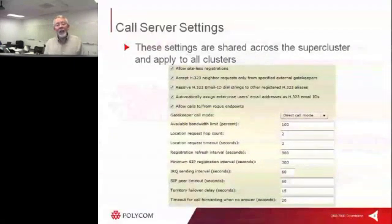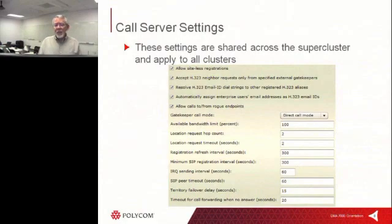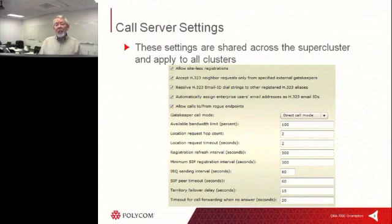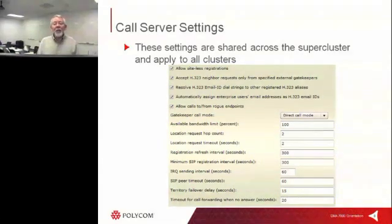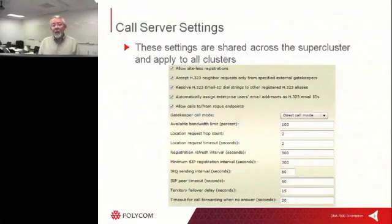Let's look at the call server functions now being provided. These are shared across the supercluster and applied to all clusters. One thing about superclusters: they automatically communicate with each other — there's no master and no slave. When a new cluster comes into the supercluster, it is automatically brought up to speed and its information is shared around. Some of the call server settings include the gatekeeper, typically H.323, whether we're going to run direct mode or routed mode, and also potentially some SIP setup information.